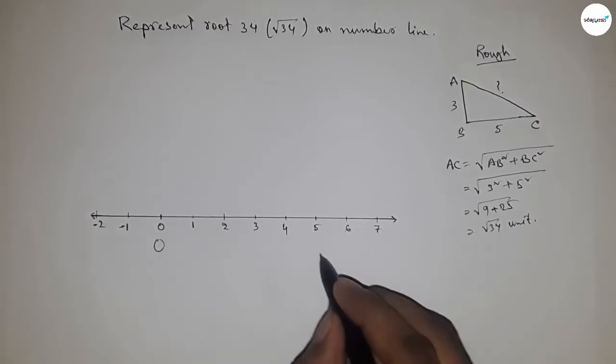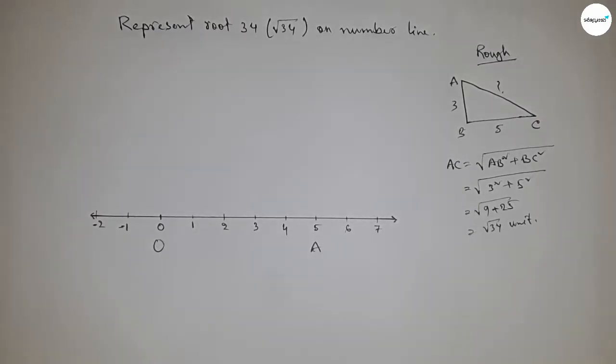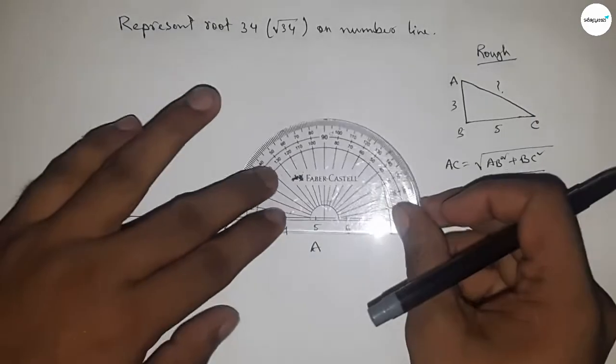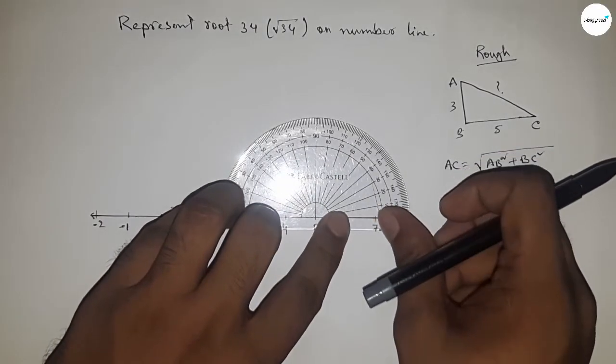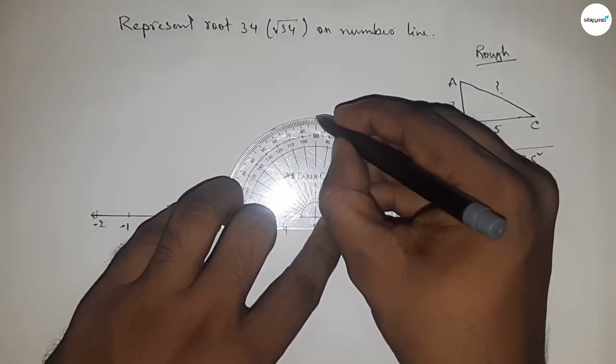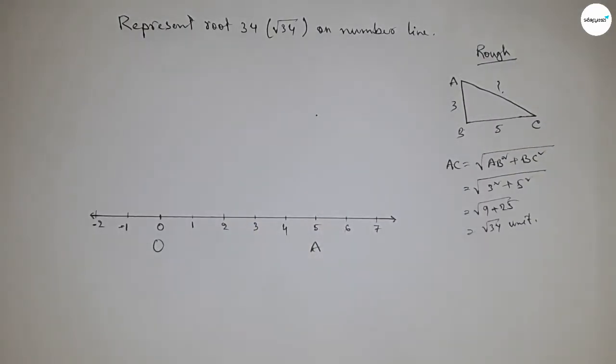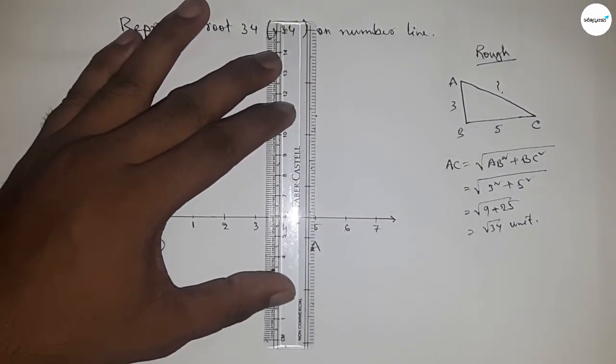Now we have to first draw a 90 degree angle on point A by using a protractor. So first drawing a 90 degree angle. Now joining this by scale.